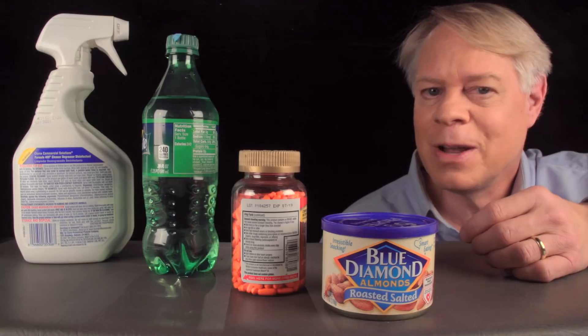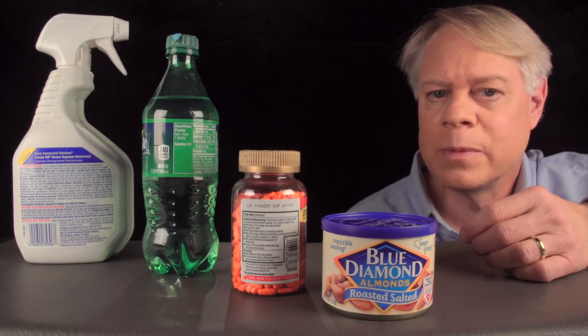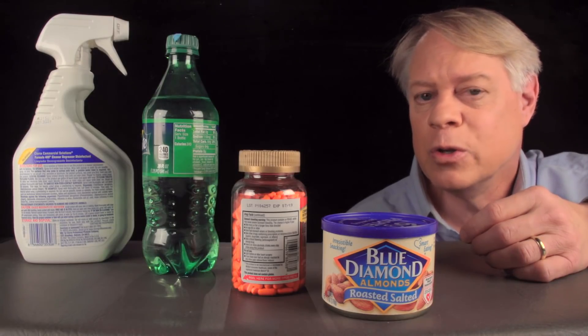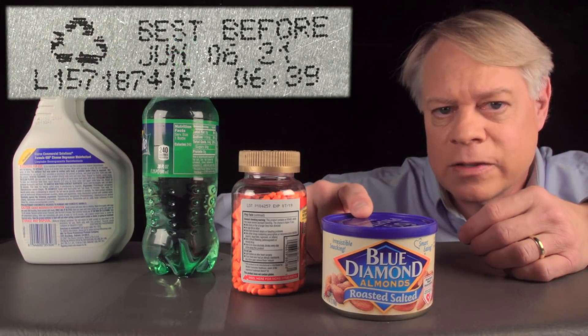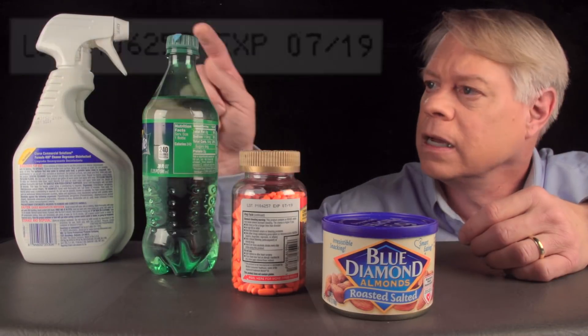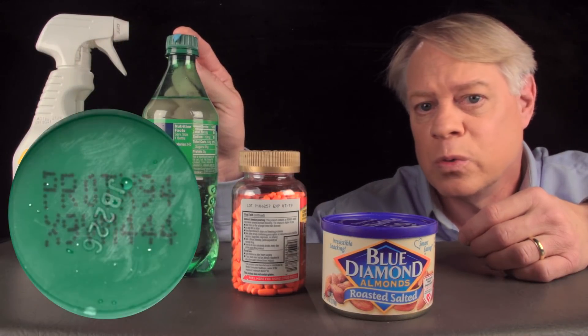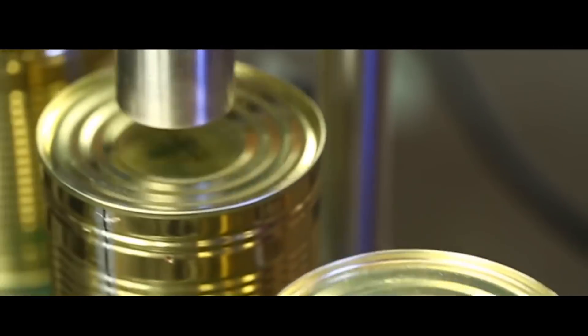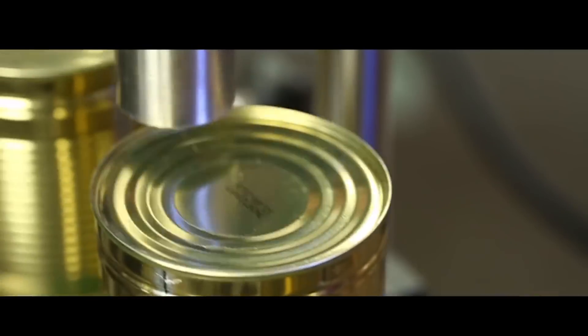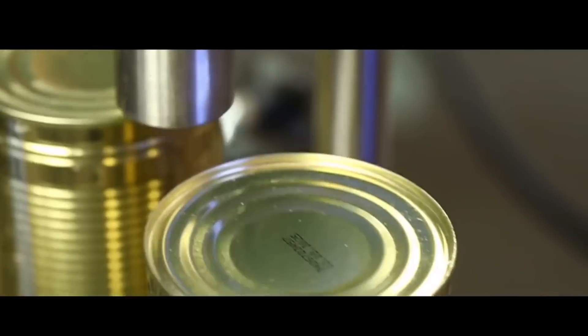Here's a clever engineering application of this method to produce drops. It's the inkjet printers used to code packaging. On the bottom of this almond can is a sell-by date. On the ibuprofen, an expiration date. Under the cap of the soda, a code used perhaps in a contest. And on this cleaner, a serial number. These codes were printed by industrial-strength inkjet printers that throw ink up to an inch as products move by at speeds up to 2,000 feet per minute.